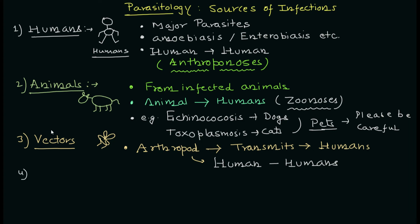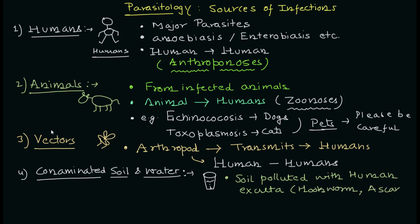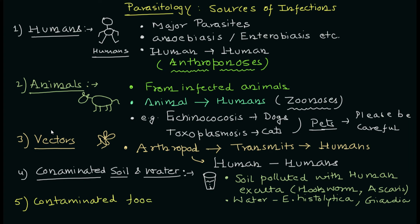The fourth important source of infection is contaminated soil and water. Soil can become a reservoir for many different types of material, especially human fecal matter, and parasites — particularly the cyst forms — can survive in drastic environmental conditions. From contaminated soil you can have hookworm and Ascaris. Water contaminated with Entamoeba histolytica can cause amoebiasis, and water contaminated with Giardia can cause giardiasis.